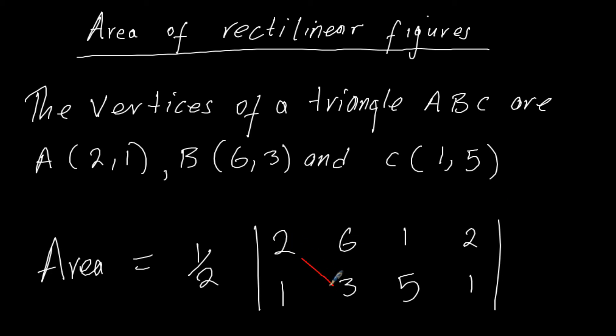So we are going to find the products. We multiply this with that, we multiply this with that, and then this with that. And then after we subtract the product, this and that, this and this, and this and that. But remember, we should be having the magnitude at the end.